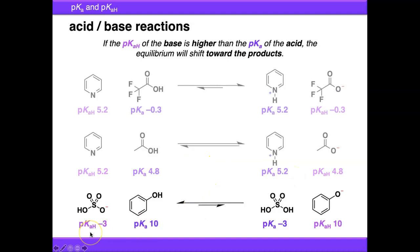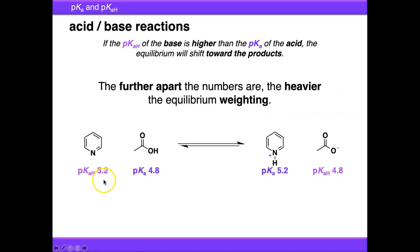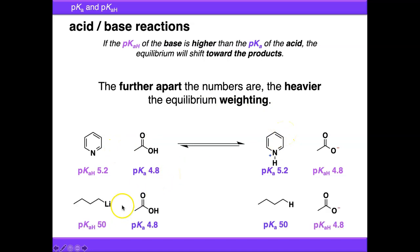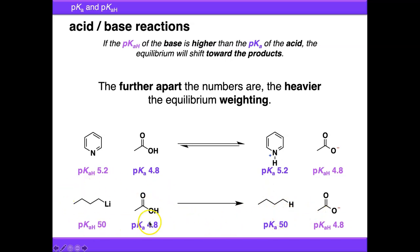At the other extreme, using a very weak base with a reasonably weak acid, the equilibrium can be weighted towards starting materials. Looking at it backwards: sulfuric acid is a very strong acid, and phenylate is reasonably basic, so you'd expect sulfuric acid to protonate phenylate easily. The further apart the two pKa numbers are, the heavier the equilibrium weighting. With n-butyl lithium — an extremely strong base with a pKaH of about 50 — this is about 45 orders of magnitude higher than the pKa of acetic acid, making the reaction effectively irreversible in one direction.